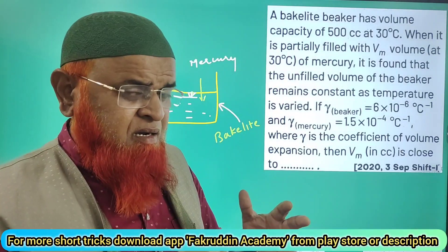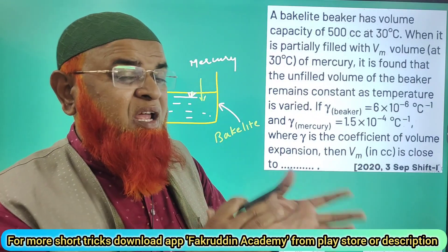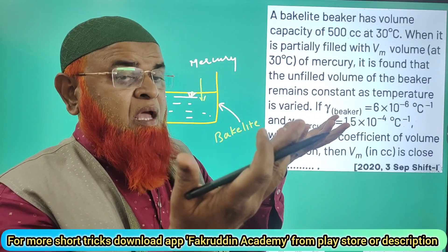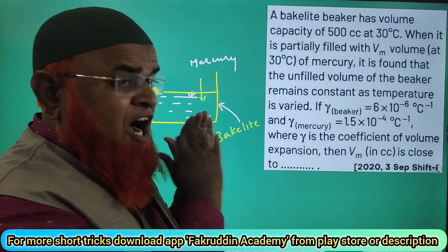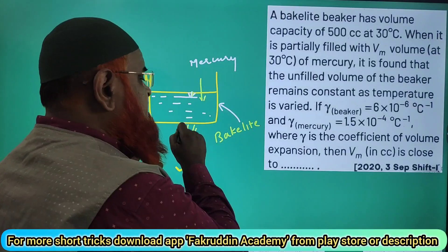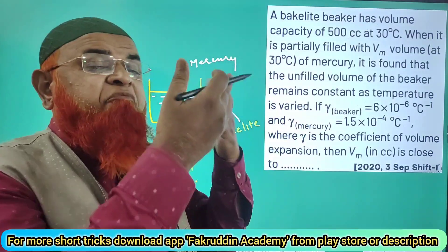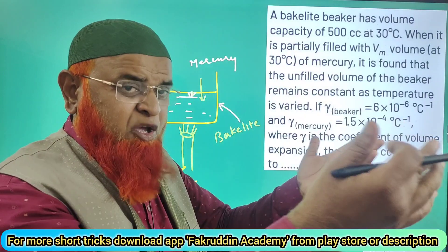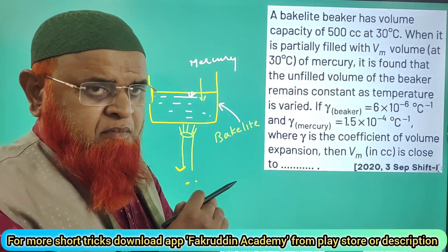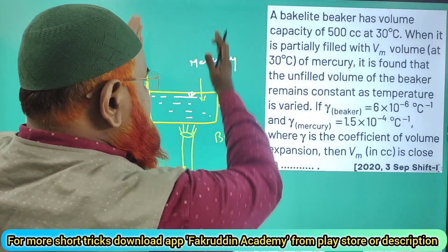The beaker contains mercury inside. The problem states that bakelite and mercury are expanding equally. So when the beaker is half filled and you heat from below, the expansion of bakelite and the expansion of mercury are both equal.